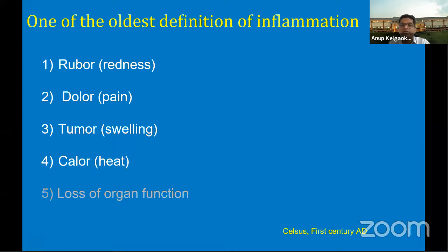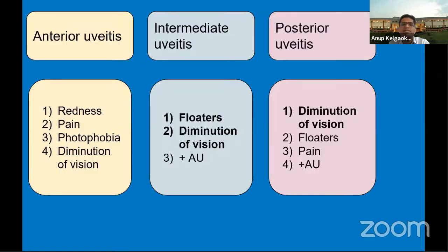We also have pain of different grades in uveitis, swelling either as lid edema or conjunctival chemosis. The heat component is not as predominant, but still present in the way KPs are arranged as described by earlier speakers. Later, the fifth inflammatory marker — loss of organ function — was introduced, which for uveitis means loss or diminution of vision. In anterior uveitis, predominant symptoms are redness, pain, photophobia, and diminution of vision. Intermediate uveitis patients often present with floaters and diminution of vision, while posterior uveitis also has diminution of vision and floaters as predominant symptoms.